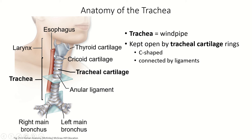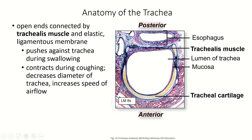Remember that the esophagus runs along behind your trachea. This is a microscope slide showing the histology of the trachea. Here you can see the tracheal cartilage — that's hyaline cartilage — and it ends here.